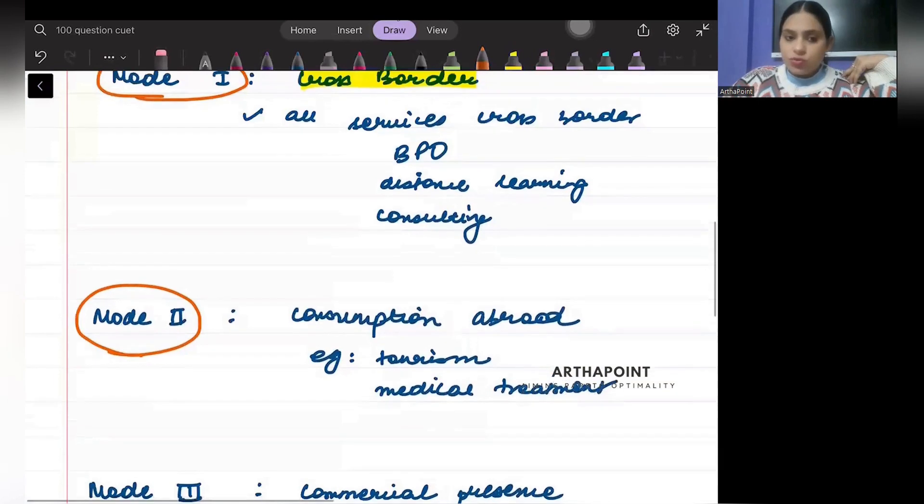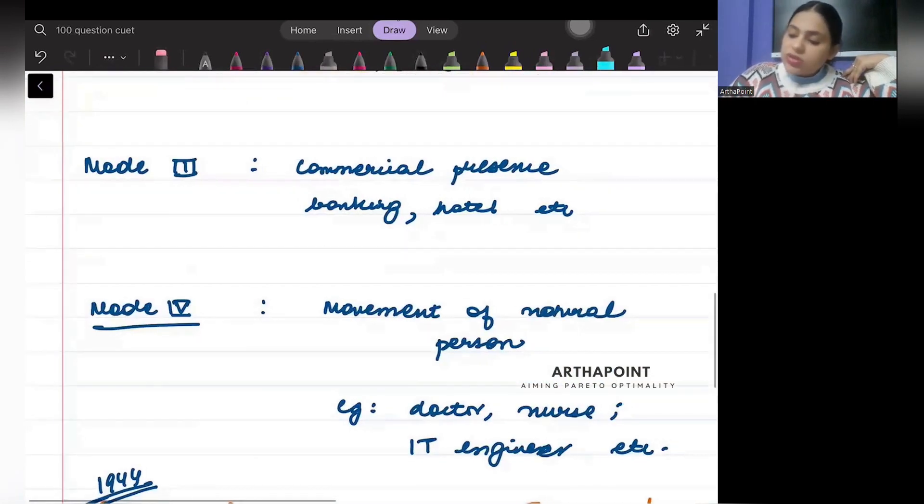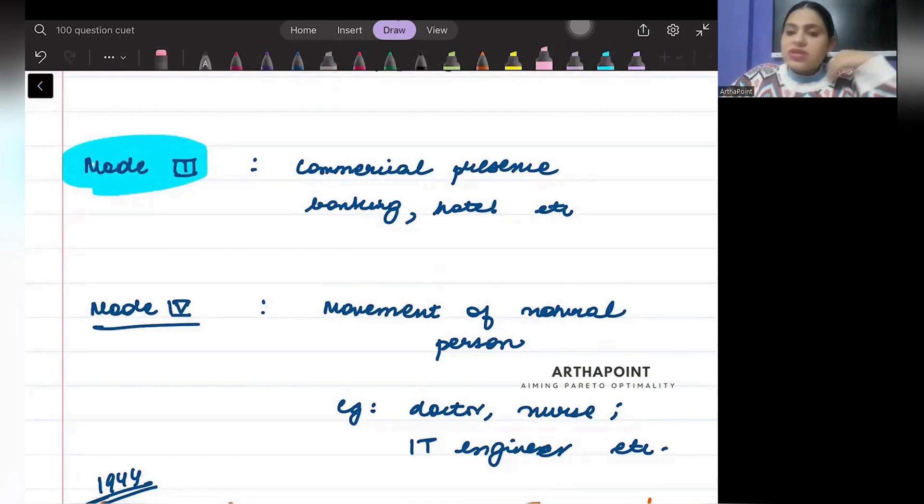The third mode is Mode 3, in which we have commercial presence. Just for example, I am setting up my hotel in Dubai. So let's say Taj, Taj is an Indian brand, suppose, and Taj has established something outside, or let's say PNB.